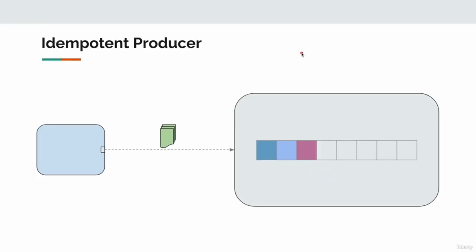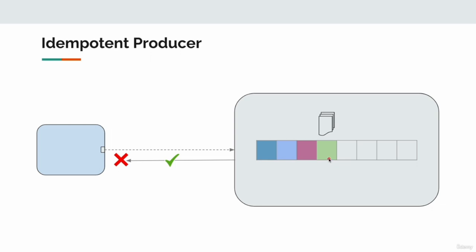In this lecture, we are going to talk about another important concept called idempotent producer and one common question related to that. Consider this scenario: the producer sends a bunch of records to write into the Kafka broker. Kafka broker receives the messages and writes those messages into the partition. Once after writing, it sends the acknowledgement, but due to a network issue the acknowledgement did not make it to the client. The client thinks it did not receive the acknowledgement and decides to retry and deliver those messages one more time.